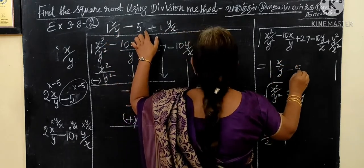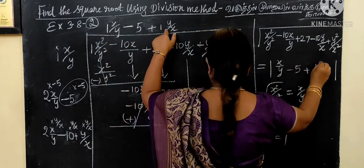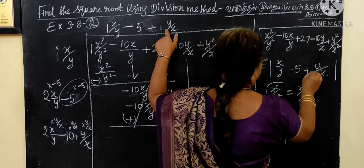x by y minus 5 plus y by x. This is the answer.